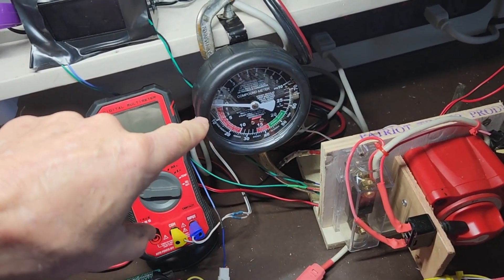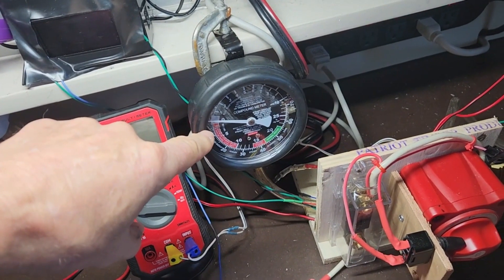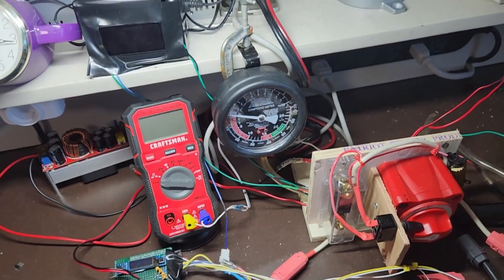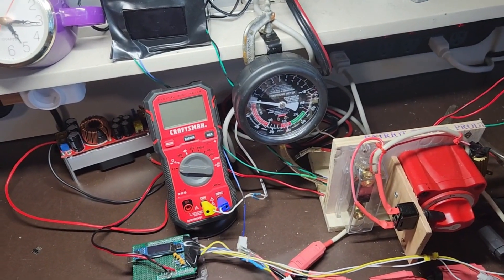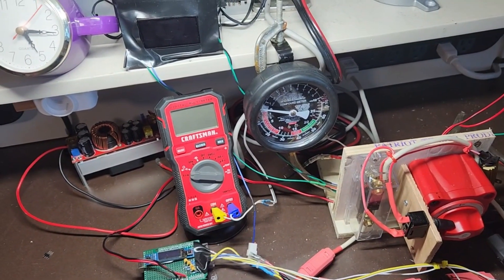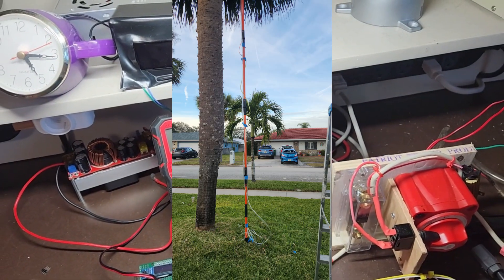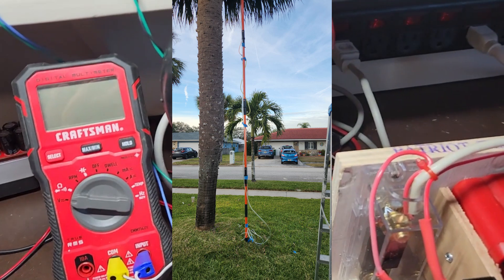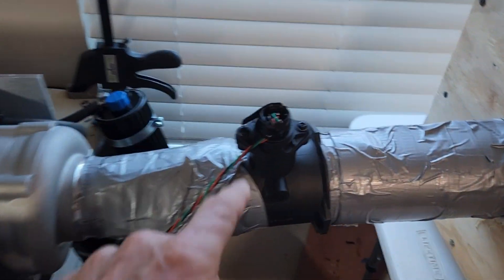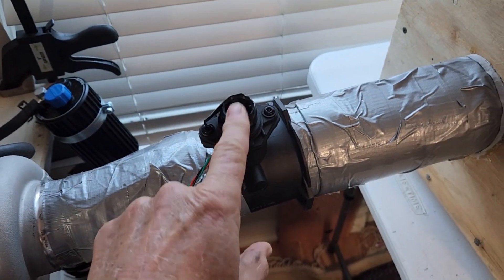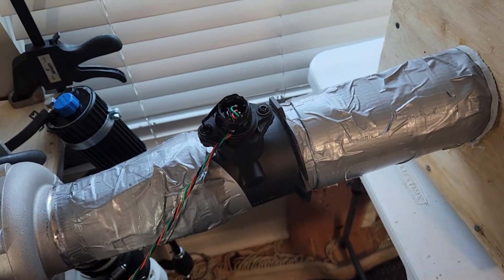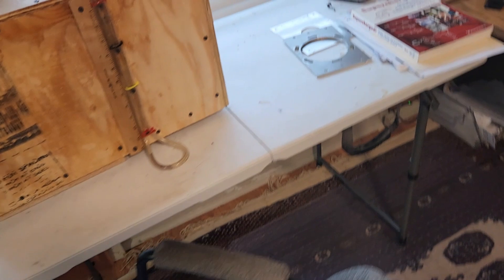First thing I did was look at this pressure gauge, my $13 Harbor Freight pressure gauge. Is that thing accurate? I'm going to show you a picture here. I calibrated that thing with a 16 foot long column of water. I'll show you a picture here and it turns out it's just dead nuts accurate. How about this mass air flow sensor? How can I calibrate this thing? How can I verify it with first principles?